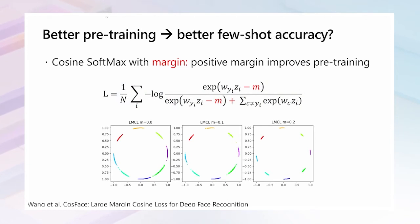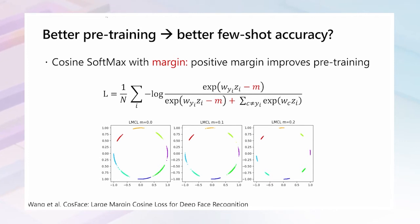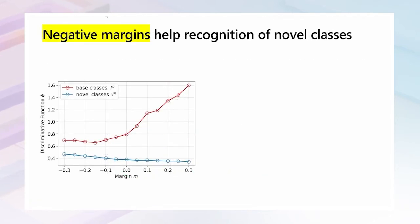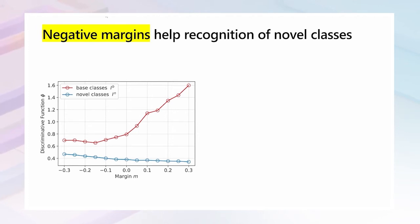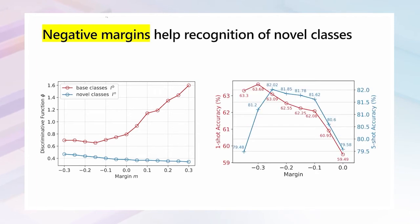However, does better pre-training result in better few-shot accuracy? We studied this problem by using margin in pre-training. In general, a positive margin improves pre-training performance. For example, using a 0.2 margin value can make different classes distribute with more distance from each other. Increased margin values help improve discriminating power on base classes, but they harm transfer power on novel classes. As shown in the figure, one-shot and five-shot accuracies are both improved by about 4 points and 3 points, respectively.